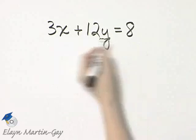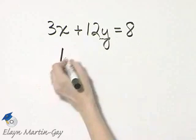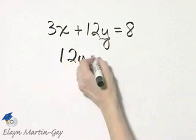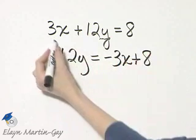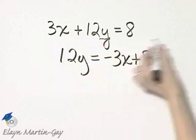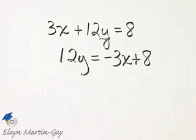I'll begin by subtracting 3x from both sides, and I'll have 12y equals negative 3x plus 8. I subtracted 3x from this side and from the right side also.